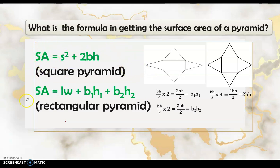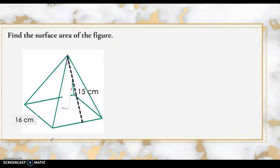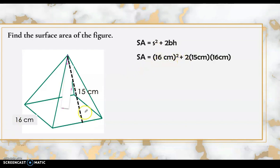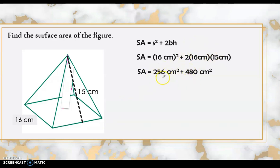Let's have more examples. Find the surface area of this square pyramid where the side measures 16 centimeters and the slant height is 15 centimeters. Using the formula SA = s² + 2bh: substitute to get 16² + 2(16)(15) = 256 + 480 = 736 square centimeters. The surface area of this square pyramid is 736 square centimeters.